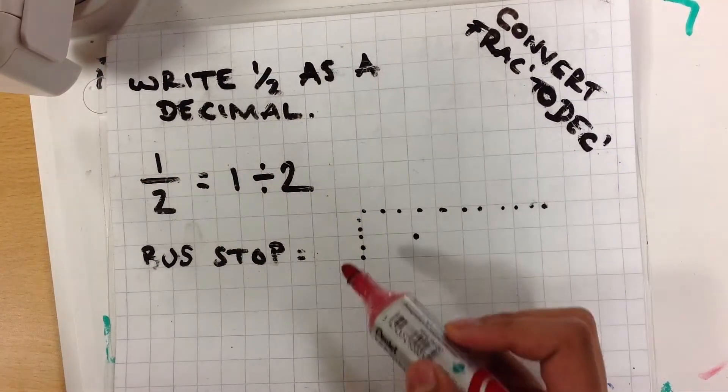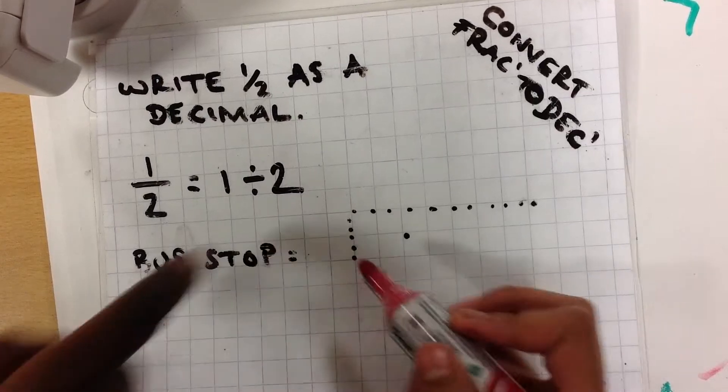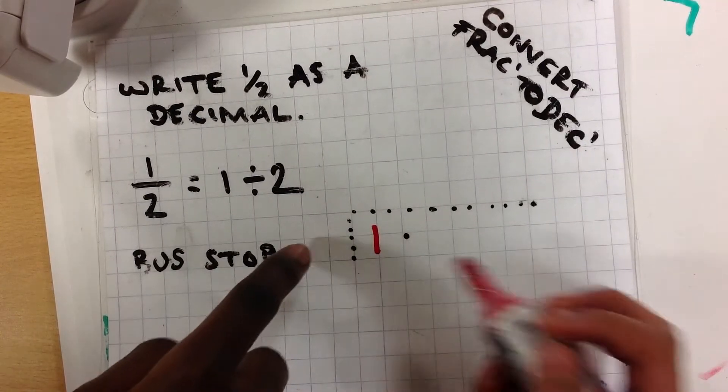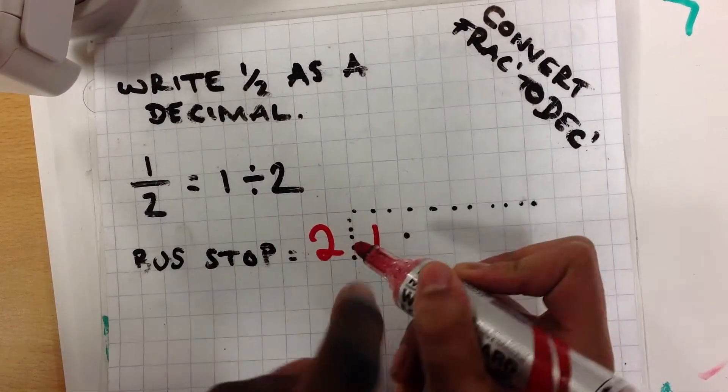We can use the bus stop method to do this. We'll put the 1 here, 2 there, and we'll put 3 zeros.